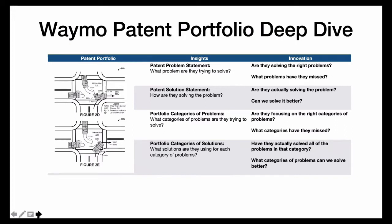And then at the category level as well: are they focusing on the right categories of problems? What categories might they have missed? Have they actually solved the problems in that category, and what categories of problems can you solve better? That is how to use these insights to come up with better ideas, exactly how the patent system was designed.